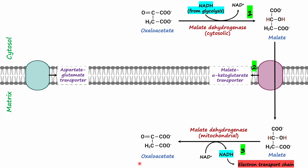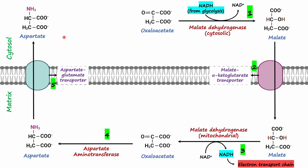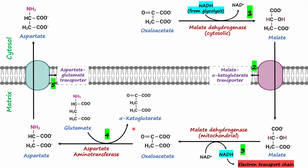Now this oxaloacetate in the mitochondria cannot cross the mitochondrial membrane; therefore, oxaloacetate must be transaminated to be converted into aspartate, and the reaction is catalyzed by aspartate aminotransferase. Once oxaloacetate is transaminated into aspartate, aspartate is now able to cross the mitochondrial membrane to enter the cytosol. The amino group on aspartate is donated by glutamate. When glutamate donates its amino group to aspartate, glutamate is converted into alpha-ketoglutarate.